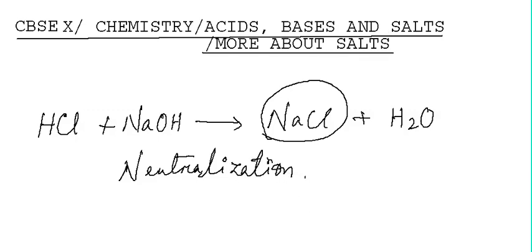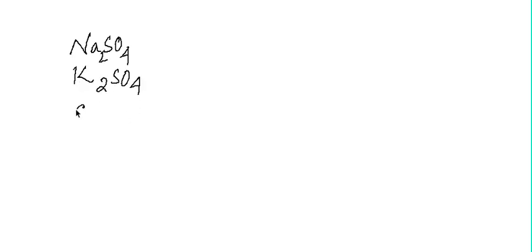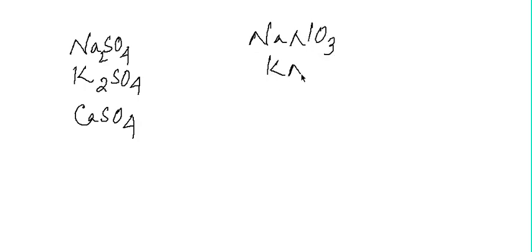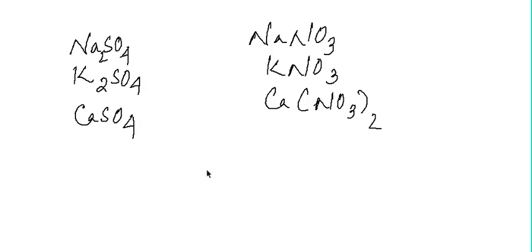There are various families of salts. For example, sodium sulfate, potassium sulfate, calcium sulfate — these are sulfate salts. Then sodium nitrate, potassium nitrate, calcium nitrate — these are nitrate salts. We can classify salts into different families: the salts containing the same anions are kept in one family — family of sulfates, nitrates, chlorides, and phosphates.